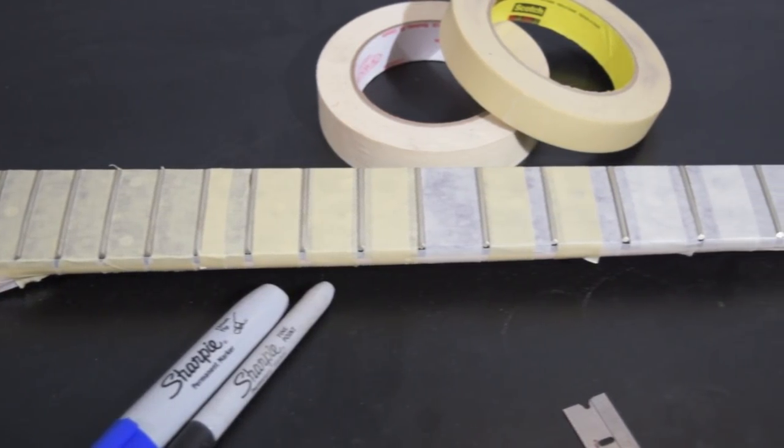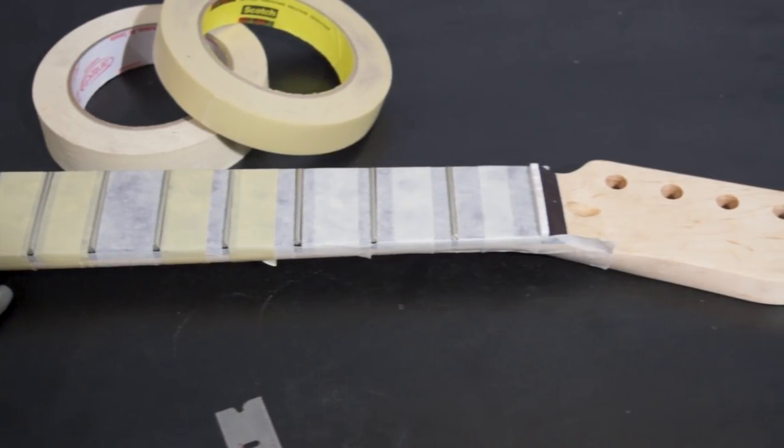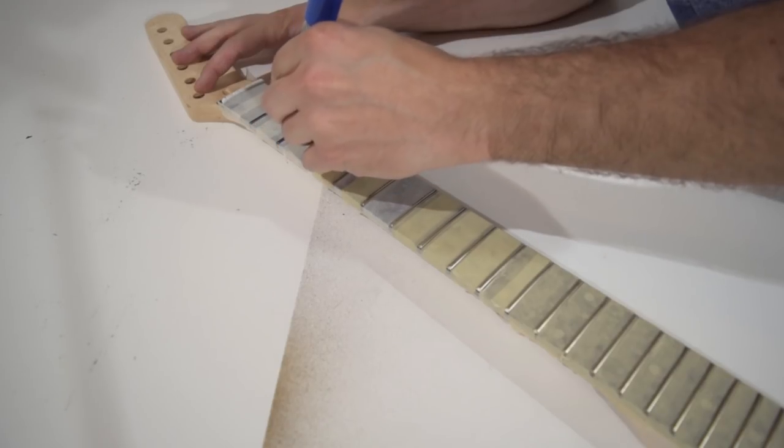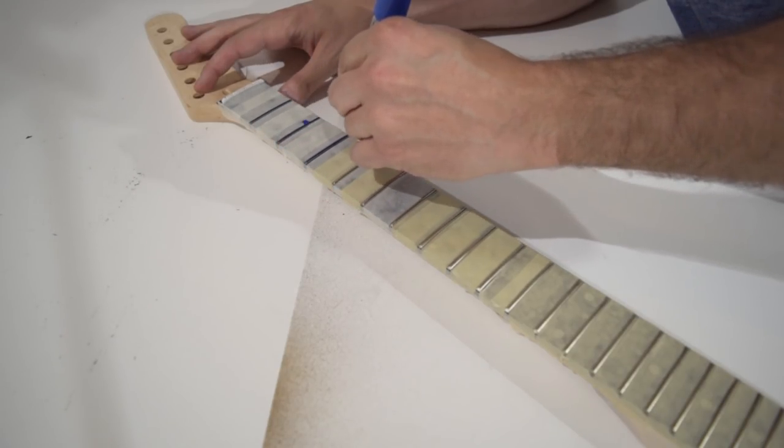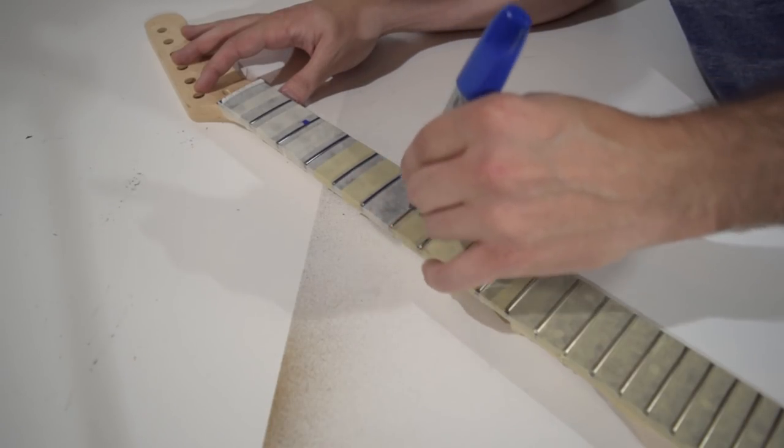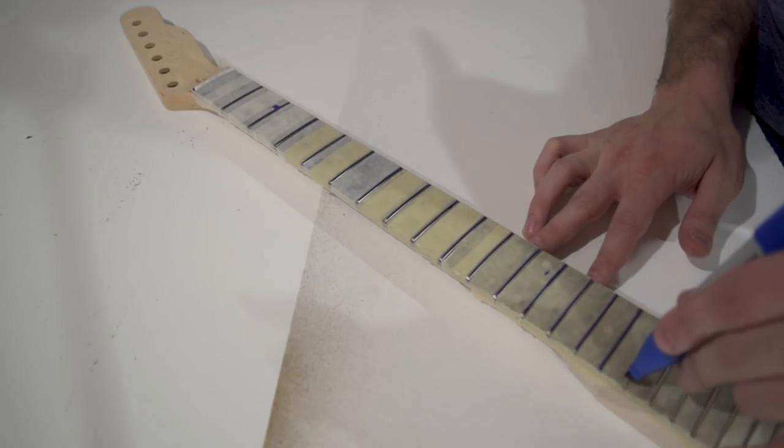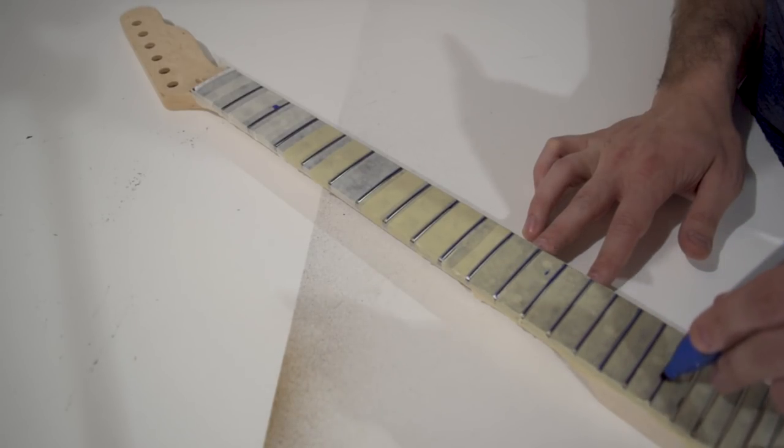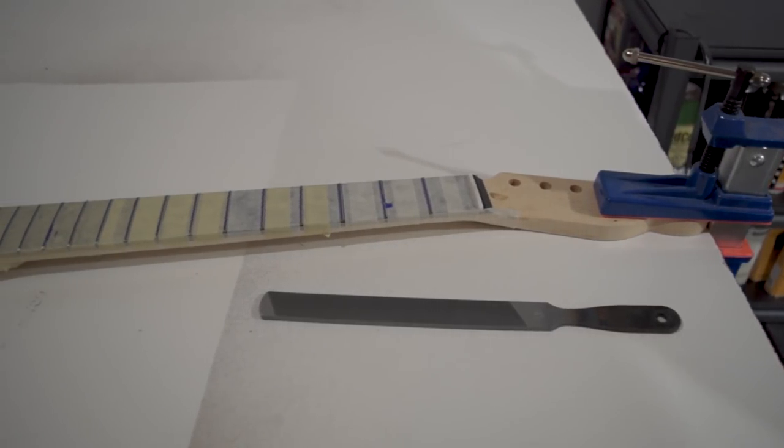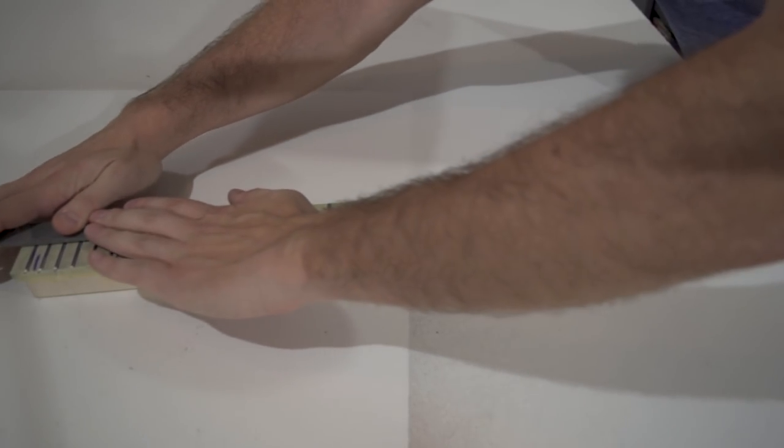And here we have it, a beautifully taped off fretboard ready for us to start working on those frets. So the next thing we're going to do is level them. In order to do that, we need to be able to discern whether or not we have any low spots. That's why I'm doing this. I'm putting some Sharpie on each of those frets so that when I start filing, it'll start taking that Sharpie off. And I know that any marker left on the frets represents a low spot where the file hasn't taken it off yet because it's lower. So now we're ready to go. We've got Sharpie in all the frets and I'm going to start filing them.